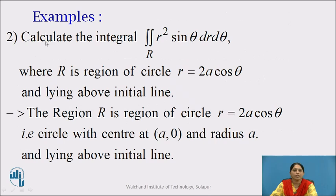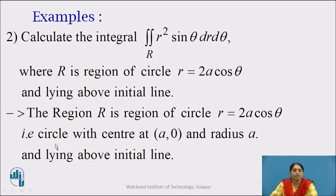Now let us go to the next example. Calculate the double integral over R of R squared sin theta dr d theta, where the region R is the region of the circle R equals to 2A cos theta lying above the initial line. We have just seen that R equals to 2A cos theta is a circle with center at (A, 0) and radius A. Therefore, the region R is the upper half of this circle.